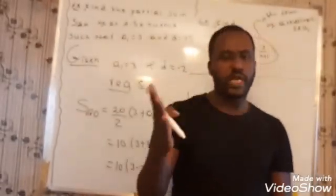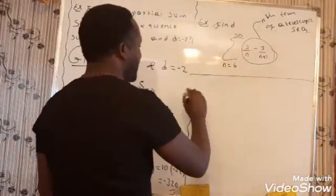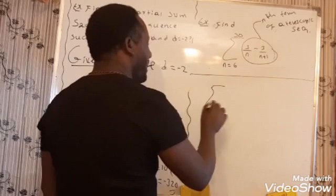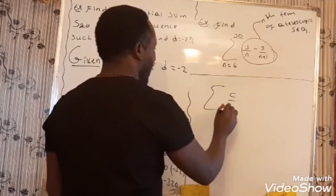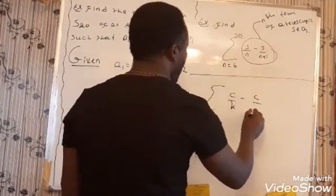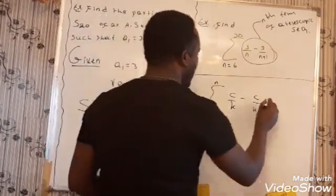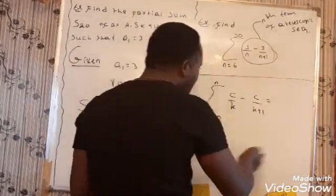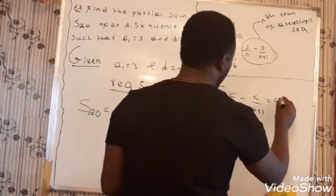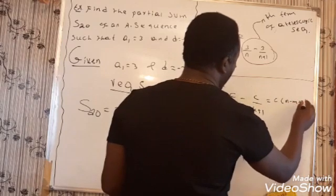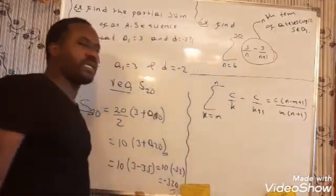Let me tell you what we are going to do. For the partial sum of the general telescopic form: the sum of (C/k minus C/(k+1)) for k running from m to n, the result is given by C times (n minus m plus 1) over (m times (n plus 1)). This is the simple technique for finding this partial sum formula.